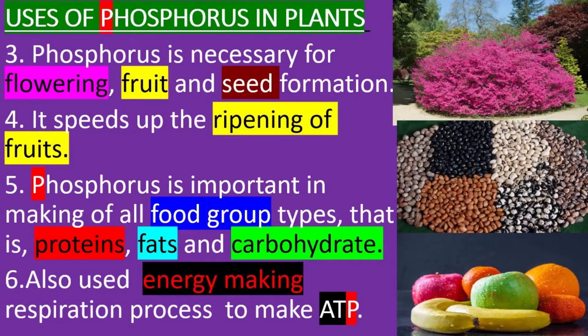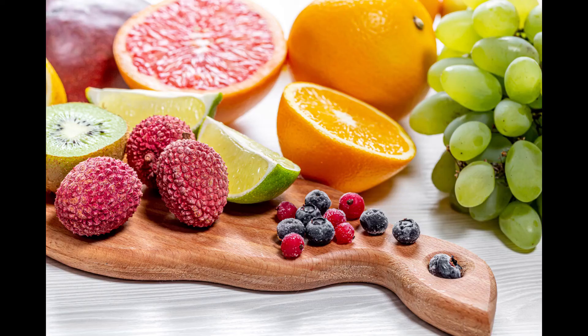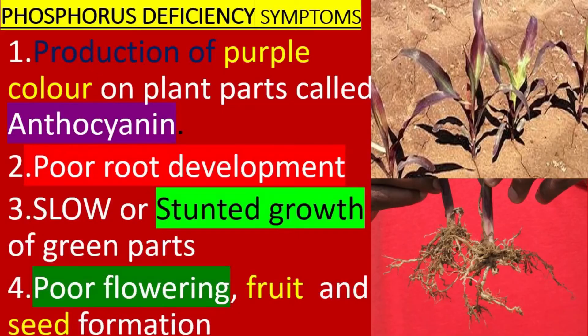Phosphorus is also involved in fruit and seed formation, and it speeds up the ripening of fruits. Additionally, phosphorus has an important role in the making of all food group types — that is, proteins, fats, and carbohydrates — and it is involved in the energy-making respiration process.